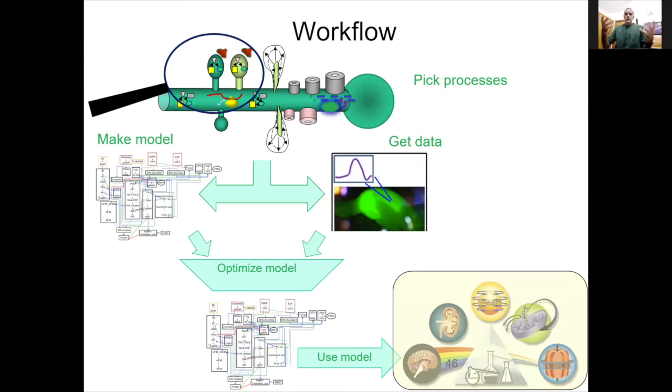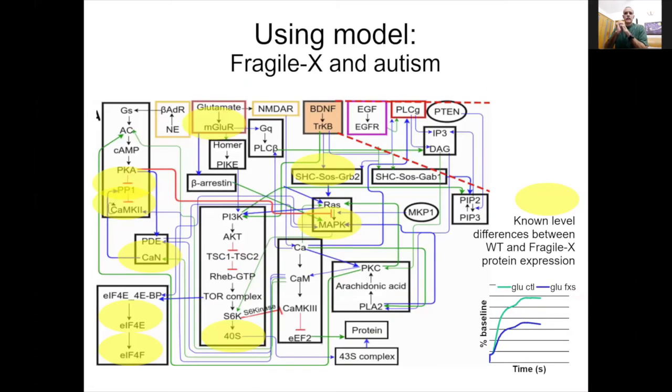We've gone through this whole process. We've built our model, gotten data, optimized the model to fit the data. Now we use the model. There are many uses that one can put to the model. Here we're using it to play with the fragile X syndrome, which is one of the major causes of autism. We know that there are certain level differences between wild type and fragile X protein expression. Those are the molecules marked in yellow. We can simply put those into the model and ask what happens to the signaling. This is very much work in progress.